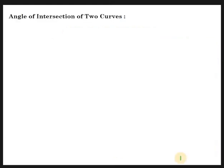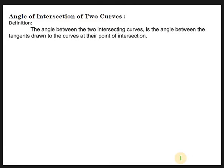Definition: The angle between two intersecting curves is the angle between the tangents drawn to the curves at their point of intersection. That means the angle between two intersecting curves is nothing but the angle between their tangents.